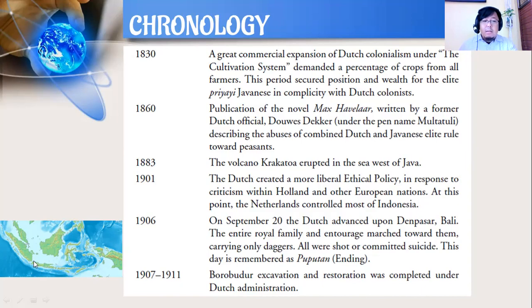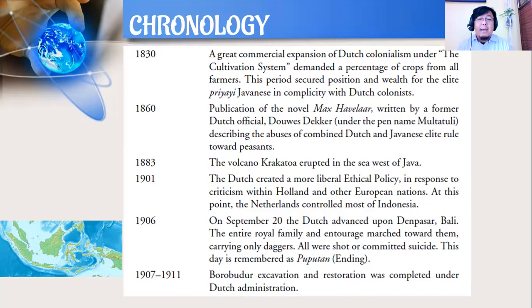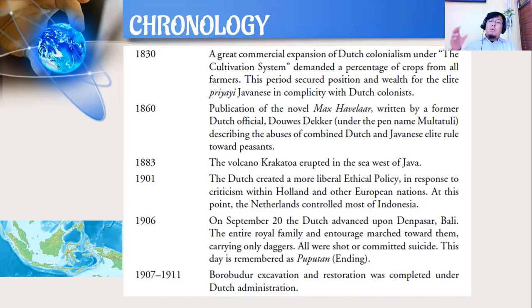In 1901, the Dutch created a more liberal ethical policy in response to criticism within Holland and other European nations. At this point, the Netherlands controlled most of Indonesia — hampir menguasai semua wilayah Indonesia.